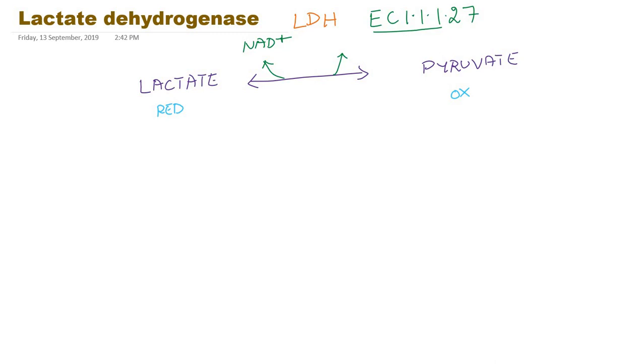That means this NAD plus is going to reduce to NADH plus H plus. In this particular reaction, lactate undergoes oxidation by donating two hydrogen atoms. The target functional group of this particular enzyme is CHOH group of lactic acid.